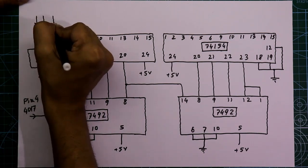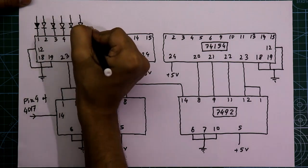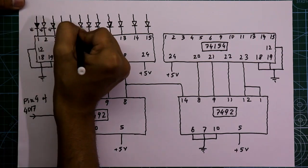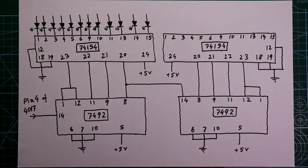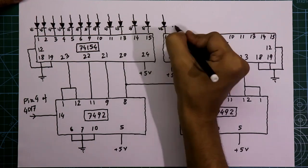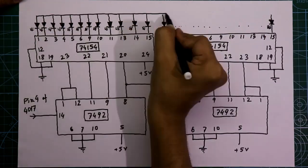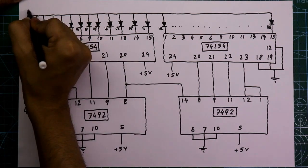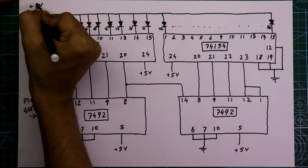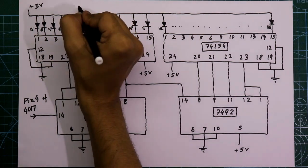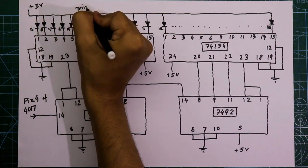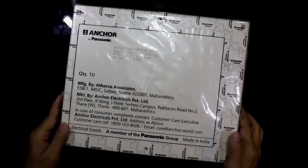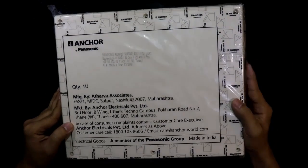The first LED is connected to pin number 1, with its negative pin connected to the IC pins. Like this we connect 12 LEDs per IC. The positive pins of all LEDs are connected together and then connected to plus 5 volts. These LEDs will show the minutes hand, and the blue LED will show the seconds.